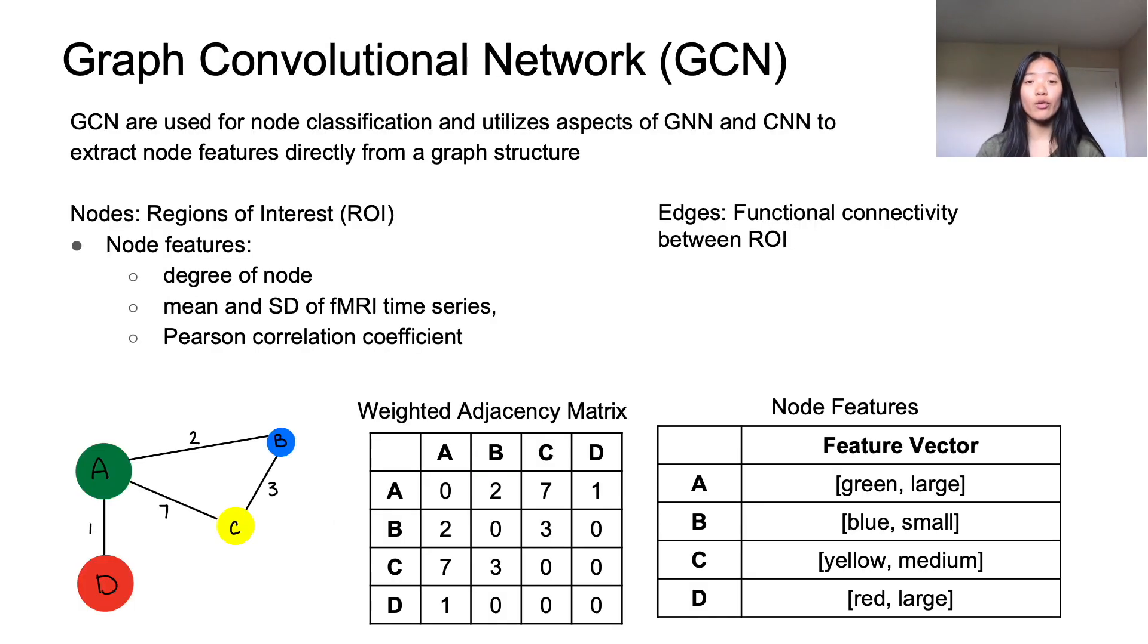What is a graph convolutional network? In a previous video, I discussed two types of networks: graph neural networks that can make predictions on graph structures, and convolutional neural networks that use filters to analyze and extract key features. A graph convolutional network utilizes aspects from both a CNN and GNN in order to extract node features directly from a graph structure, which is extremely useful for node classification.